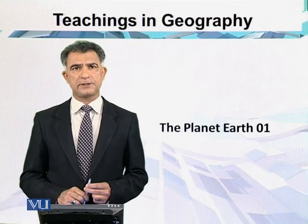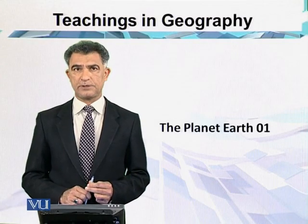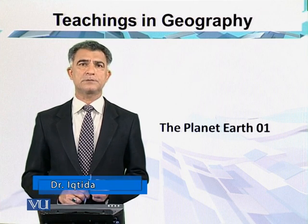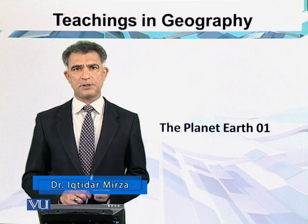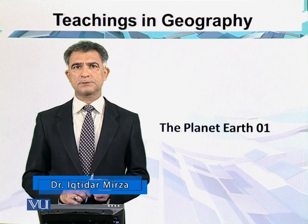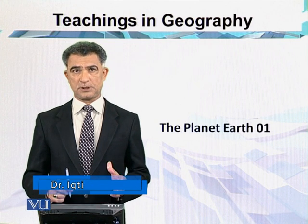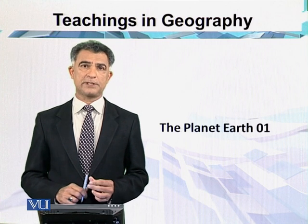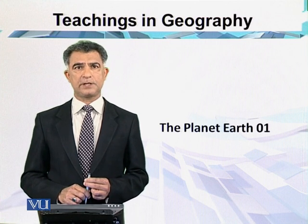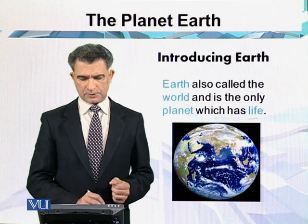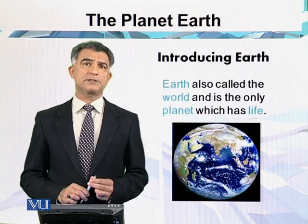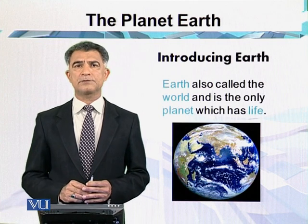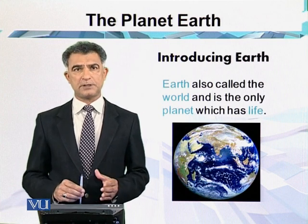As we all know, the Earth is the only planet where we have life. This planet is part of a system called the solar system. In our solar system, this planet — also called the world — is the only planet where we can find life. This life is present in the form of human life, plant life, animal life, and marine life.